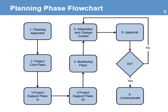Here is a flowchart that shows all the steps in the planning phase. It starts by defining the planning approach. Then, with the team and the project manager, they start developing the core plans that focus on the project constraints. Next is the development of the support plans. Then the development of the monitoring and evaluation plans. Next, it will be the responsibility of the project manager to ensure all plans are properly integrated and a change control process is implemented.